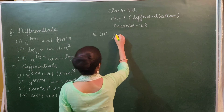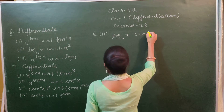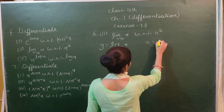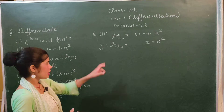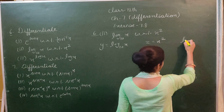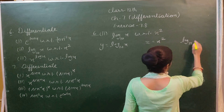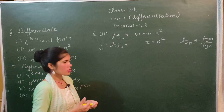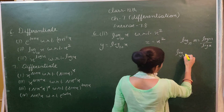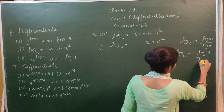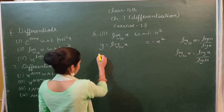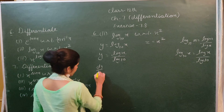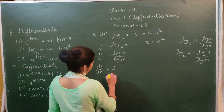In the second part of the sixth sum, we have to differentiate log(10x) with respect to x². We let y = log(10x) and z = x². Using the change of base formula, log(10x) = log x divided by log 10, so y = log x / log 10.